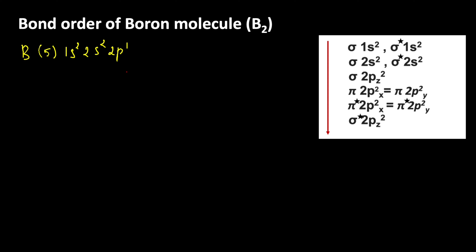For boron molecule, since there are two boron atoms, for another boron atom also, we can write the same way 1s2, 2s2, 2p1.